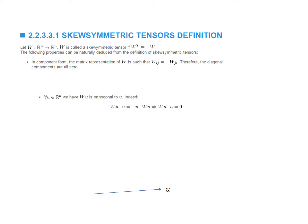Here's a picture that shows what this result means. Given a vector u, if I apply the matrix W on u, I end up with a vector Wu that is perpendicular to u.